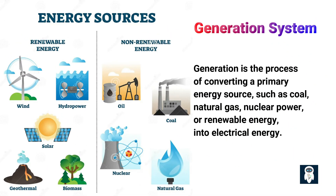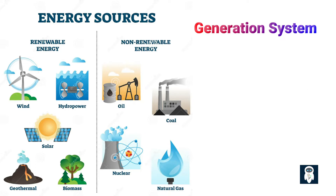Generation is the process of converting a primary energy source, such as coal, natural gas, nuclear power, or renewable energy, into electrical energy. This is done at power plants, which are located throughout the grid.